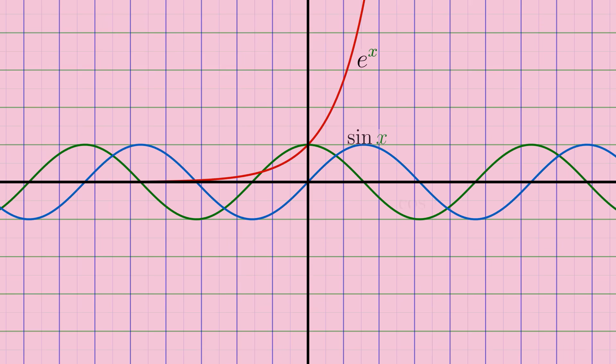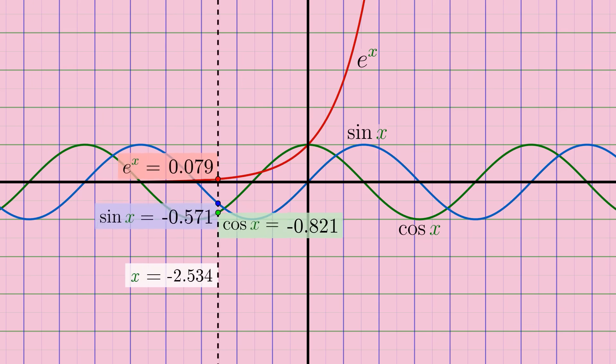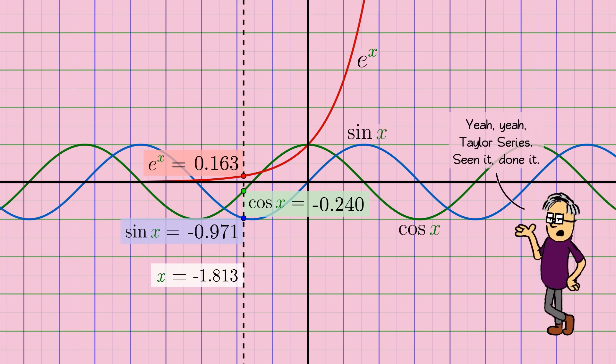How do you calculate functions like e to the x, sine of x, or cosine of x at any given x value? Like, how might your calculator do it? This is a very old and classic question, and if you've taken a calculus course, you might already know the very common technique for doing this that I'm about to show.